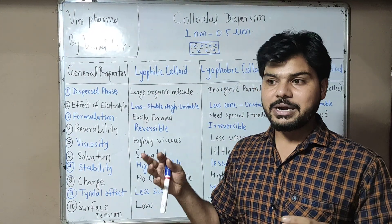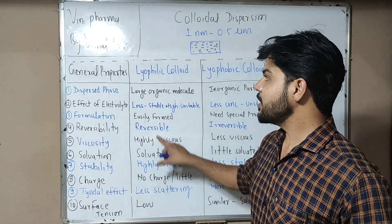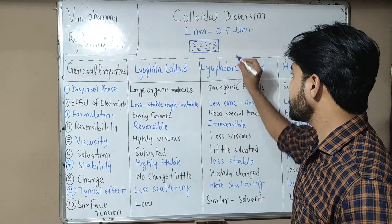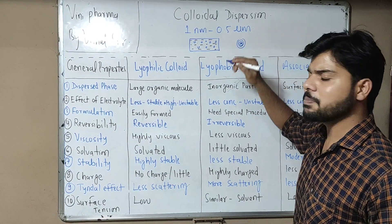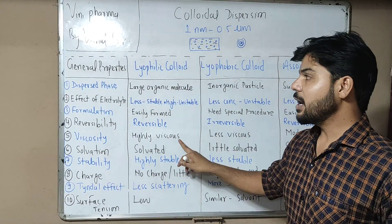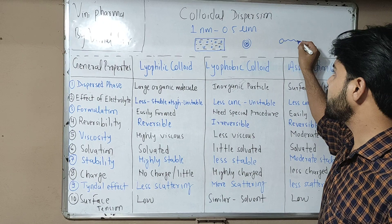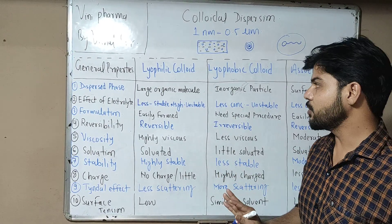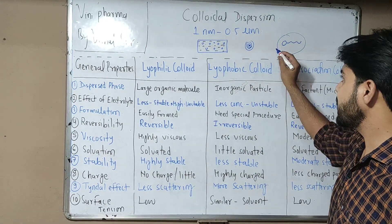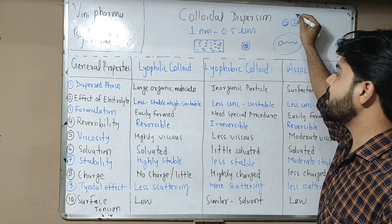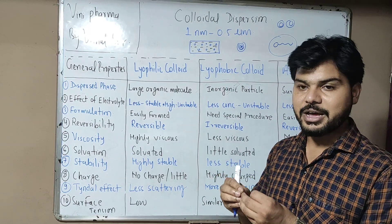Solvation means the interaction with the solvent. For lyophilic colloids, the solvent easily forms a layer around the colloidal particles through simple spontaneous dispersion — they are easily solvated. For association colloids, which have polar and non-polar parts, the solvent easily mixes and they become solvated. But lyophobic colloids are charged particles that are solvent-hating, so they cannot interact easily with the solvent — they are only slightly solvated.